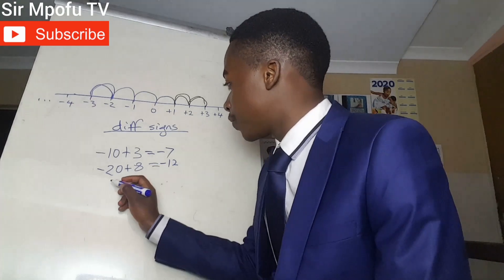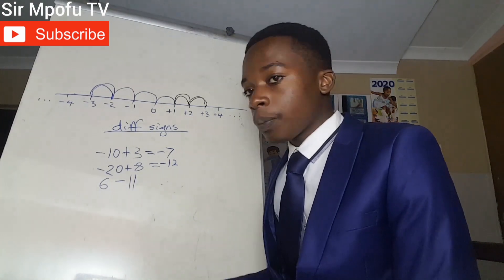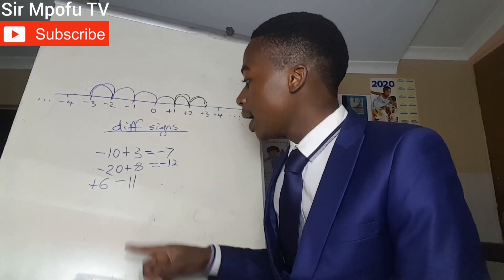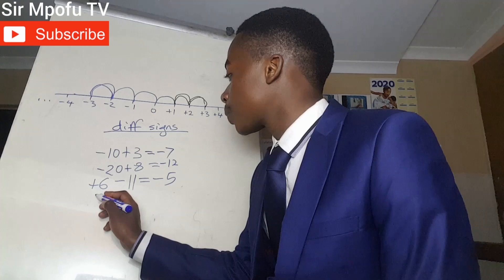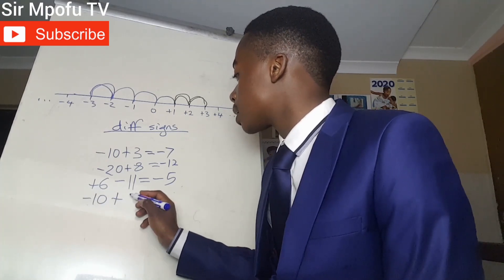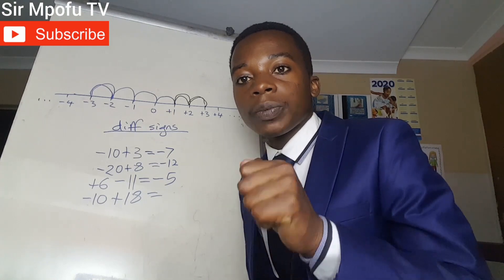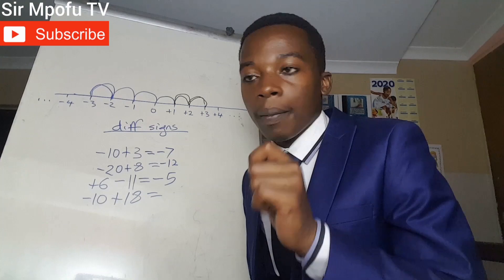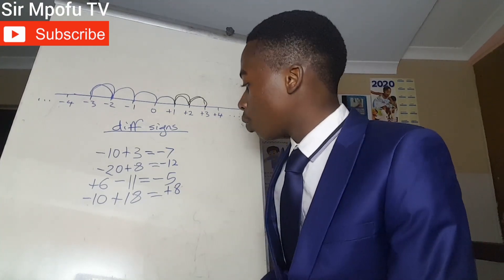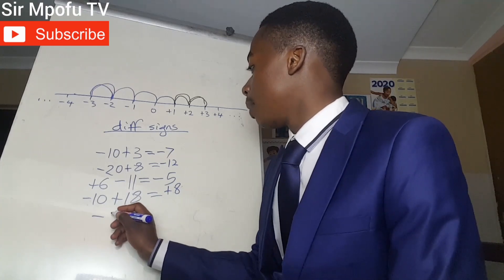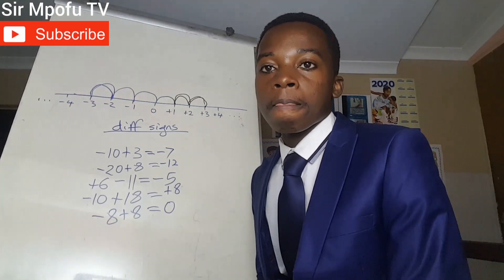What if you have six minus eleven? If there's no sign, it's automatically positive, so we have different signs. Eleven minus six equals five, and it takes the sign of the bigger number — minus five. What if you have minus ten plus eighteen? Different signs — eighteen minus ten is eight — take the positive sign — answer is positive eight. And if you have minus eight plus eight, your answer is zero, and zero does not have a sign.